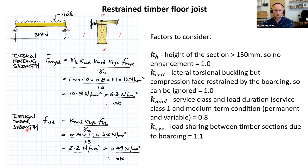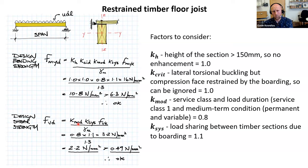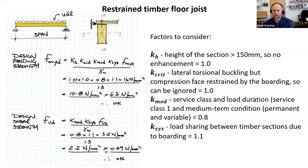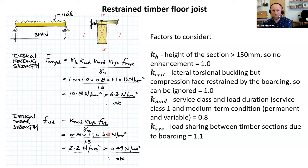Similarly for shear strength: taking the characteristic shear strength f_v,k from Table 1 and applying K_mod and K_sys (no K_h or K_crit needed for shear). Design shear strength = 2.2 N/mm², which is greater than the applied shear stress of 0.49 N/mm². So the beam passes the shear check. The bending parallel to grain is 16 N/mm² and shear parallel to grain is 3.2 N/mm² from BS EN 338 Table 1.